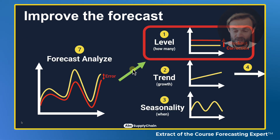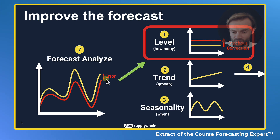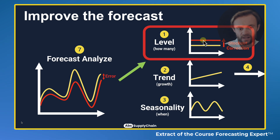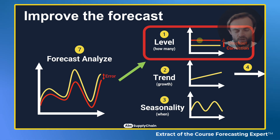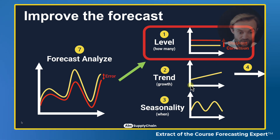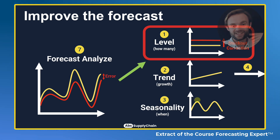Then you can also improve the forecast. You're going to track and review your forecast — that was my forecast, and that was my reality. So I tend to always have the same gap, which means I need to change the level. You can understand why you were always overestimating. Maybe my level was 100 per month but I had a lot of shortages, so it was actually 120. So I'm going to change my level, keep my trend and seasonality, recreate my forecast, and review and improve it again and again.